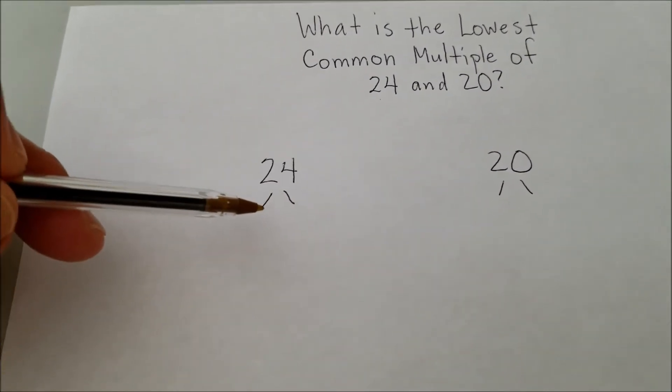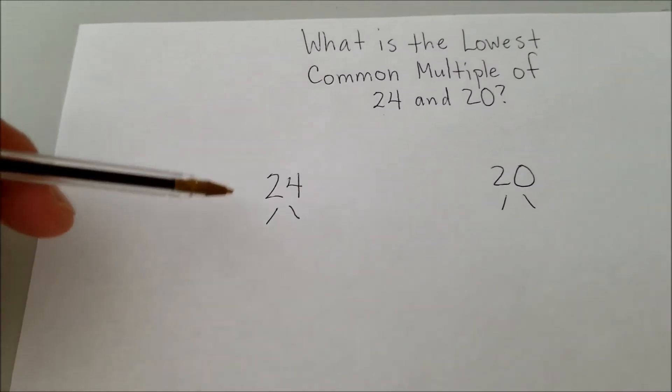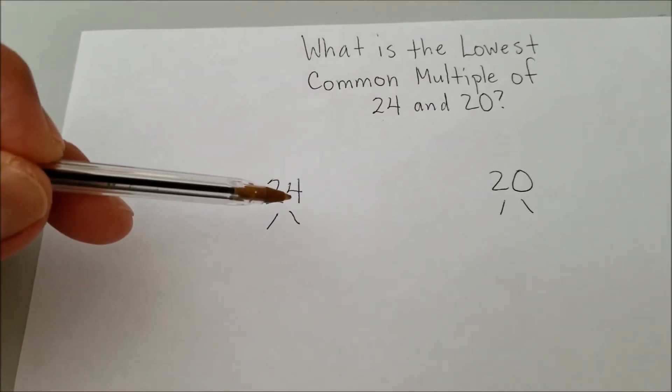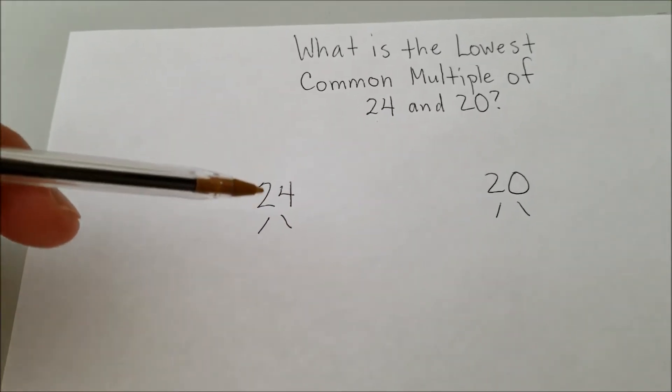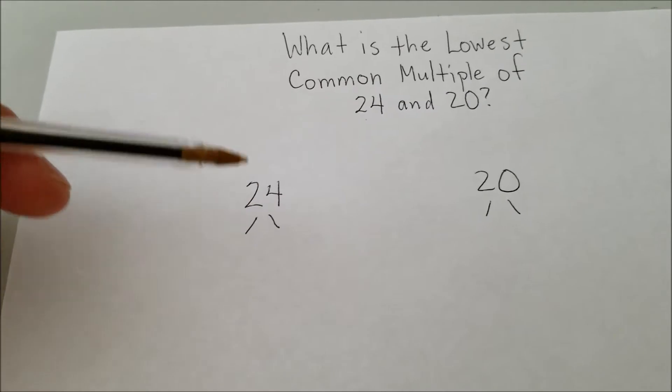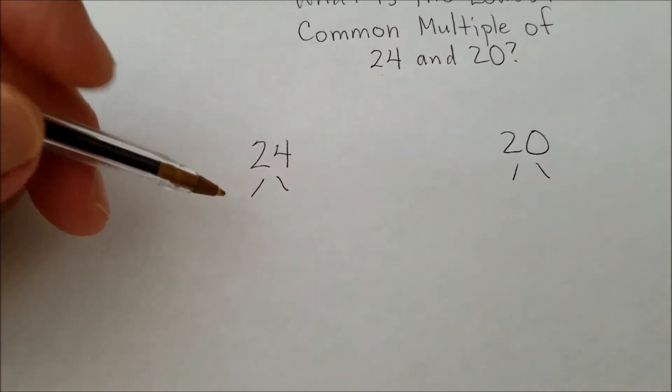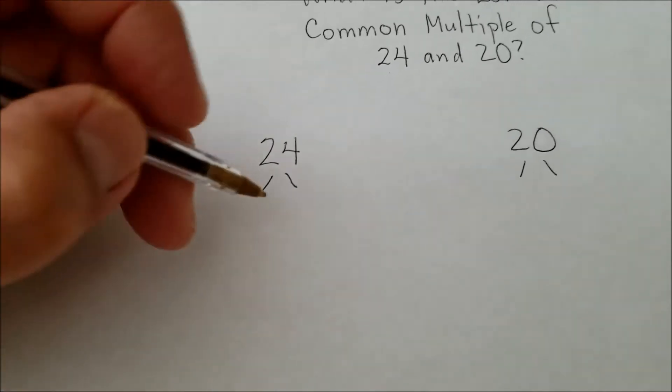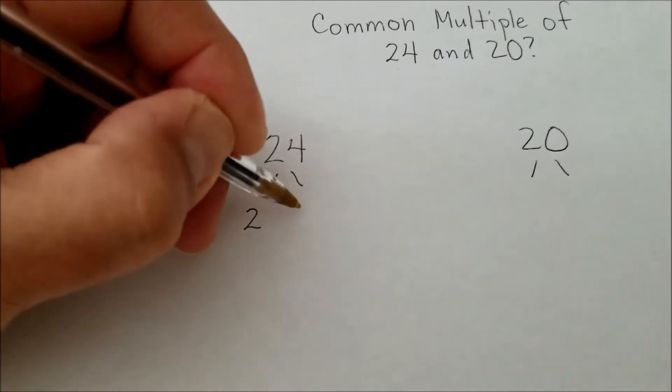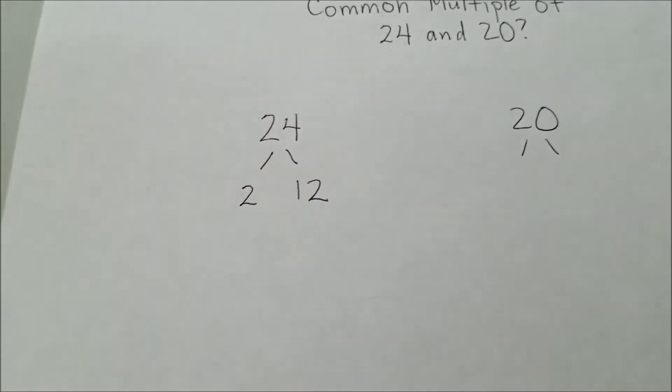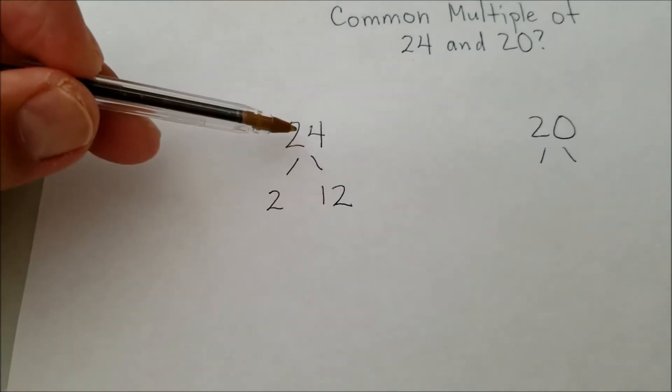So when we prime factor, we're basically going to factor out each number to find out which prime numbers multiply to make up this number. Let me show you. So it doesn't really matter how you solve this or which factors you use, but let's just go ahead and let's just go 12 times 2. So 2 times 12 equals 24.